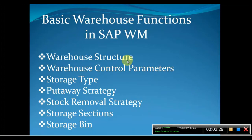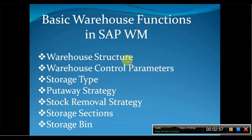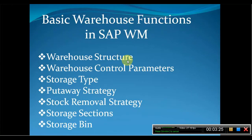Storage type refers to a number of areas within our warehouse — specific defined areas of storage, meaning where we physically store our material. These specific areas are called storage types. We can define different storage types based on our needs. For example, for slow-moving products we can define a different storage type, or for special stock we can define a different storage type. We can configure storage types by following the navigation path through IMG.